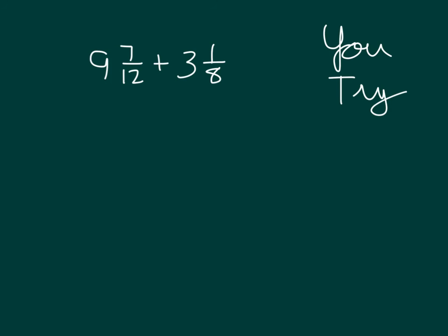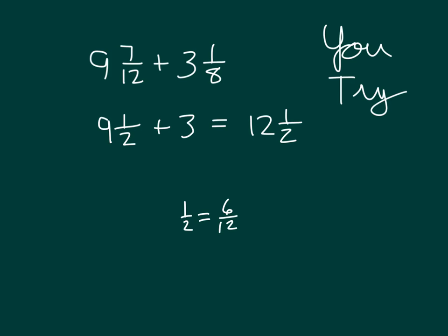It's your turn to try. Here we have 9 and 7 twelfths plus 3 and 1 eighth. Pause the video while you do your work. Did you estimate 9 and 7 twelfths as 9 and 1 half? 3 and 1 eighths is closer to 3, so we have 9 and 1 half plus 3, which equals 12 and 1 half. The key is recognizing that 1 half equals 6 twelfths, so 9 and 7 twelfths is close to 9 and 6 twelfths — that's why we estimate it as 9 and 1 half.